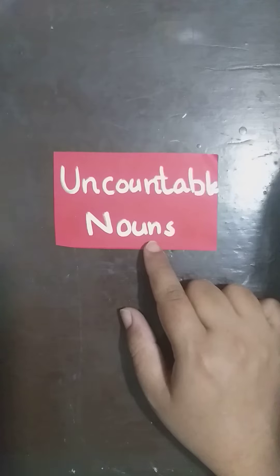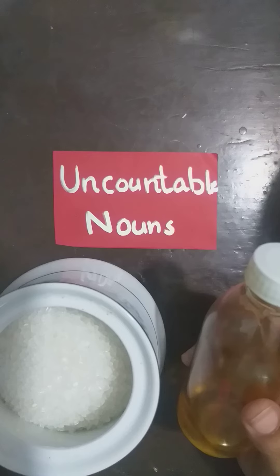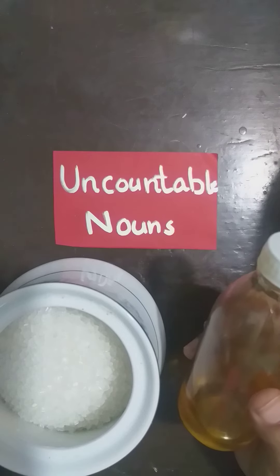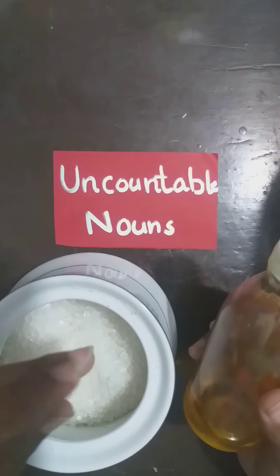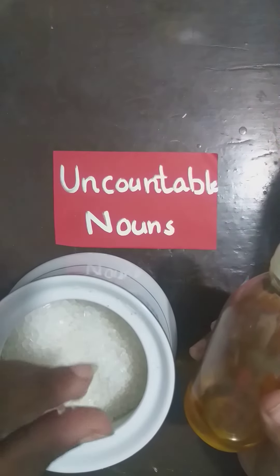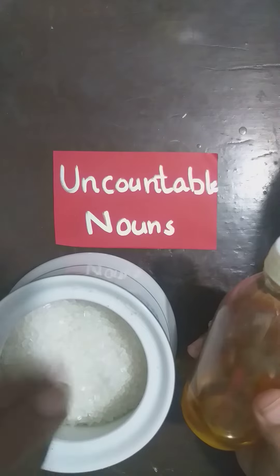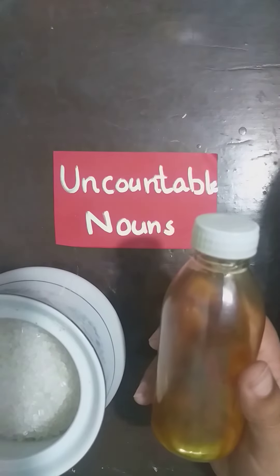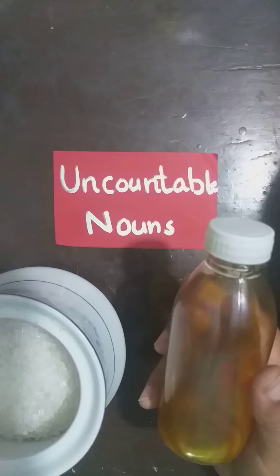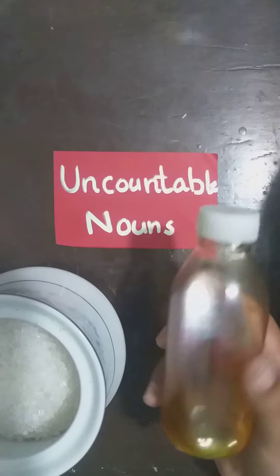Uncountable nouns are the nouns which cannot be counted. They are also called mass nouns and refer to liquid substances and ideas. For example, sugar — can we count the grains of sugar? No, we cannot, so this is an uncountable noun. Similarly, this is a bottle of oil — can we count how many particles of oil there are? No, we cannot.